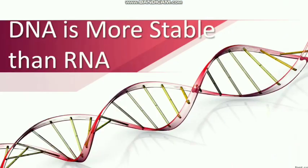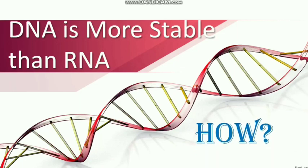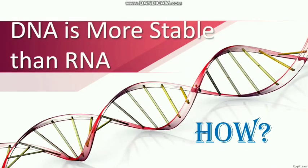The answer to why DNA replaced RNA is that DNA is more stable than RNA. We can describe this stability by discussing three aspects: first, DNA is less reactive; second, DNA is double-stranded; and third, DNA is non-catalytic. Let us see these aspects one by one.